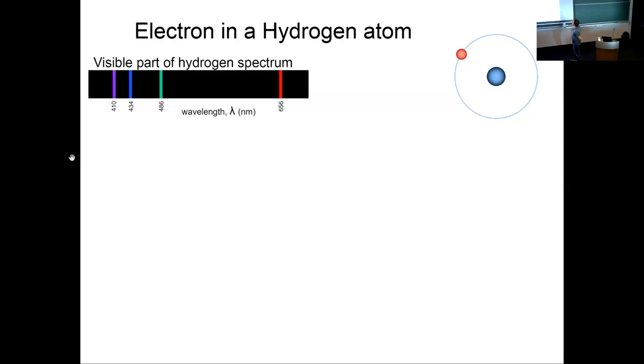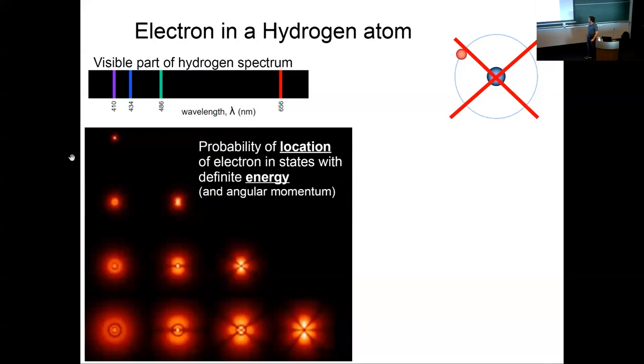First, it would have a continuous set of values for energy, because there's no reason this orbit cannot be a little bit smaller or a little bit larger. And second, it would actually be completely unstable, because going around, an electron, being a charged particle, would actually emit radiation, electromagnetic radiation, lose energy, and spiral into the nucleus.